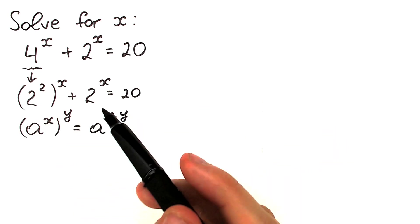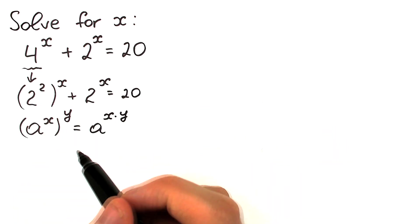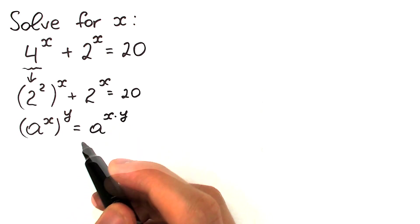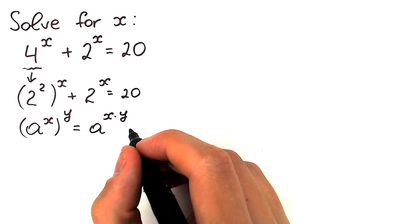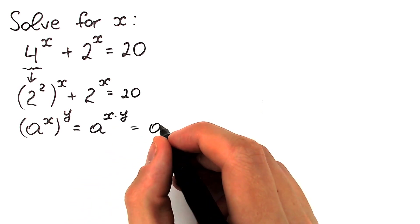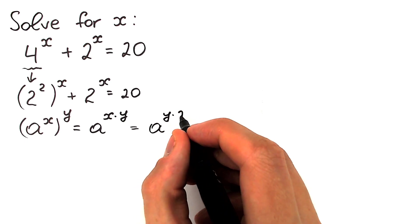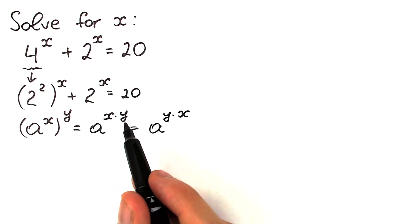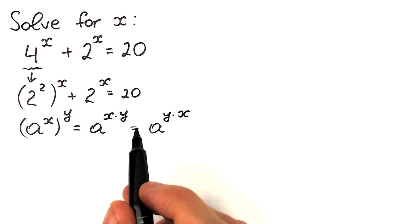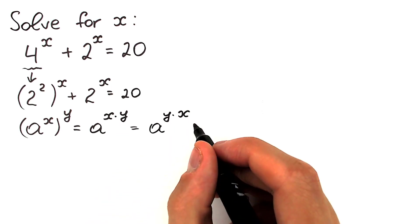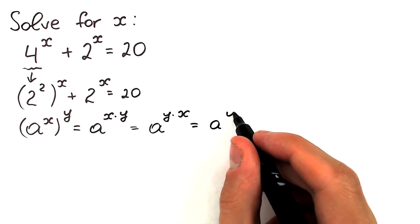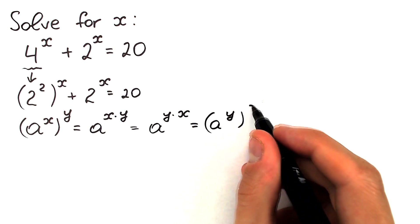We can write x times y as a product, and because of multiplication we can also write this as a to the power y times x. Because it doesn't matter whether you have 2 times 3 or 3 times 2 — you always get 6. So we can write it as a to the power y times x.